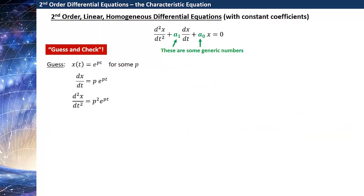Let's end by talking about the more general case. Let me write down a second-order linear homogeneous differential equation with constant coefficients, but now with generic numbers out front — I'll just call them a1 and a0. Again, in principle you could have an a2 in front of the second derivative, but you can always divide that out. So I can use guess and check to solve a general differential equation of this form, and the general guess I'm going to take is, again, x of t is e to the pt, regardless of what a1 and a0 are, as long as they're numbers.